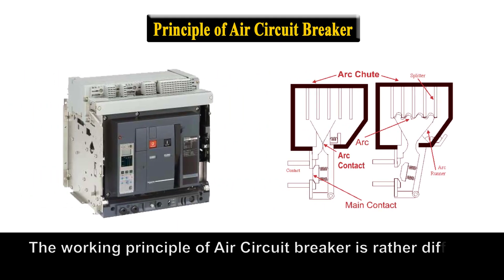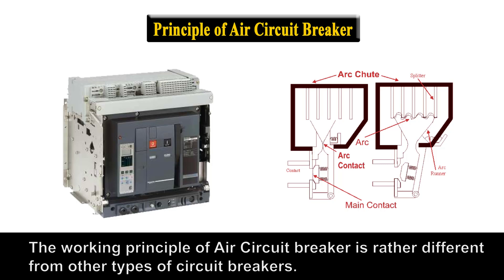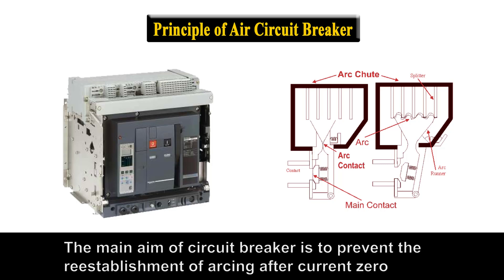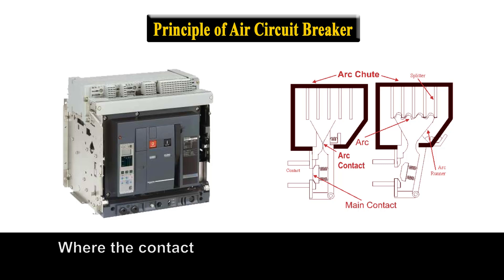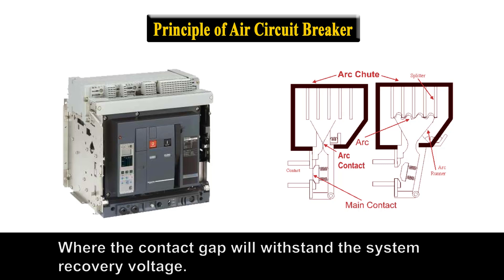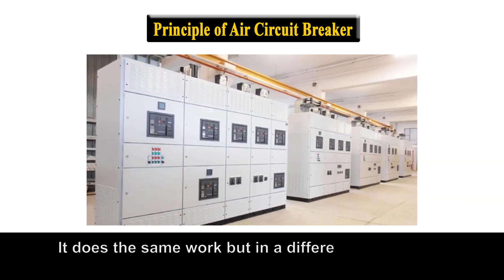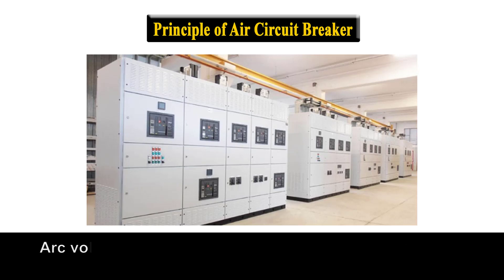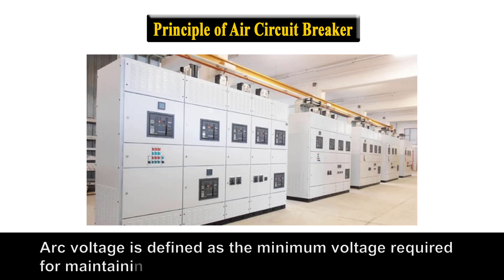The working principle of Air Circuit Breaker is rather different from other types of circuit breakers. The main aim of the circuit breaker is to prevent the re-establishment of arc after current zero, where the contact gap will withstand the system recovery voltage. It does the same work but in a different manner. During the interruption of arc, it creates an arc voltage instead of the supply voltage. Arc voltage is defined as the minimum voltage required for maintaining the arc.